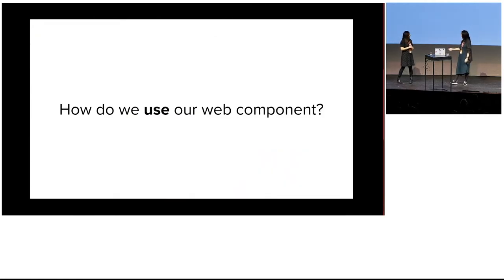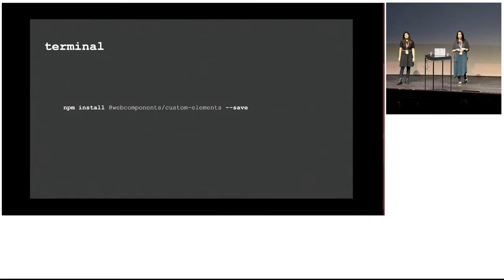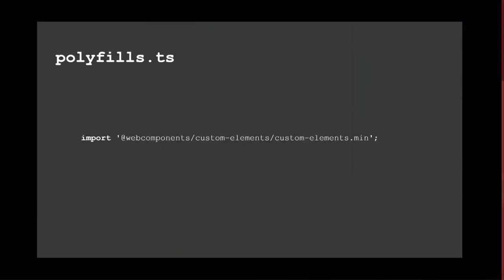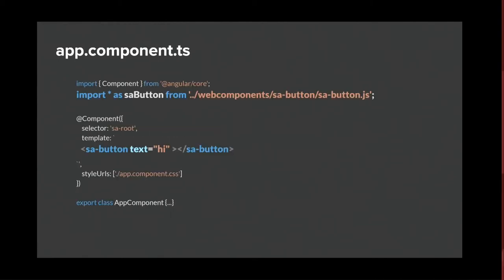Now that we have the component built, how can we use it in an Angular project? This part is pretty simple — we mainly need to import it into our project. Before doing so, remember to install the polyfills and add them to our polyfills.ts file. The next important step is to add the schemas array with the CUSTOM_ELEMENTS_SCHEMA in your NgModule. You're basically telling Angular that there are not just Angular components, but also web components. If you forget this, Chrome DevTools will shout at you anyway. Then you simply import it where you want to use it.